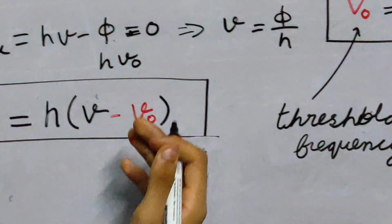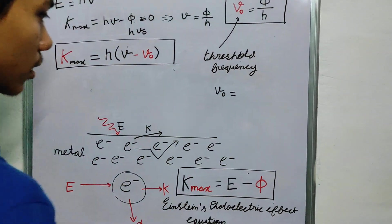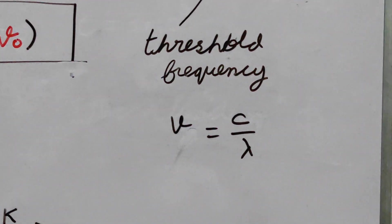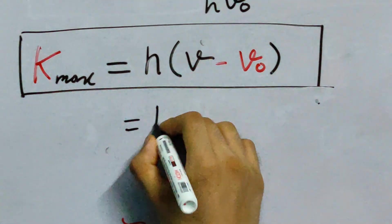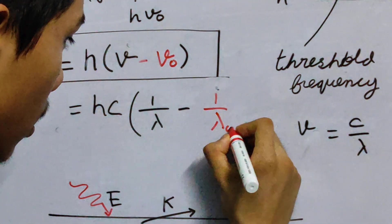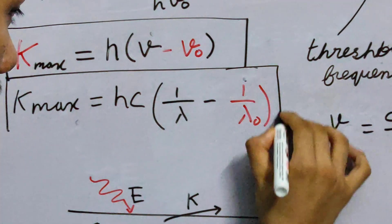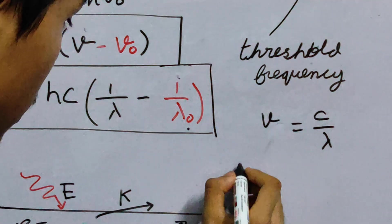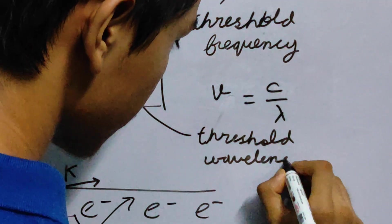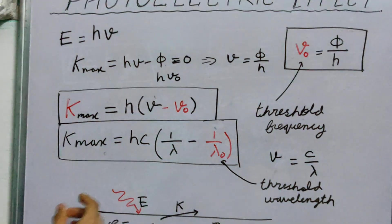Of course, we can add another thing called the threshold wavelength because we know that frequency, any frequency in general is like this speed of the wave divided by its wavelength. So, you can use this. You can use this and you can say, this is equal to hc. The c will factor out 1 upon lambda minus 1 upon lambda naught. This will also work. So, k max will be this. Of course, this is known as our threshold wavelength. This is our Einstein's equation in terms of our threshold frequency, nu0 and the threshold wavelength.